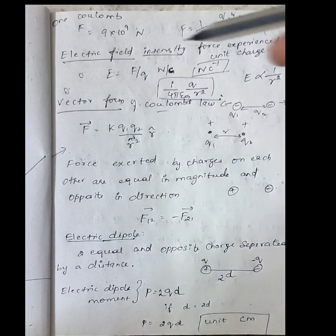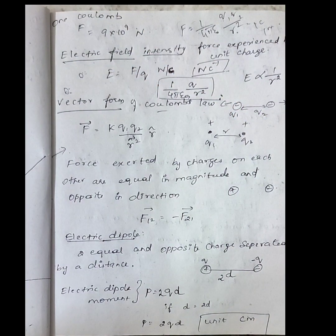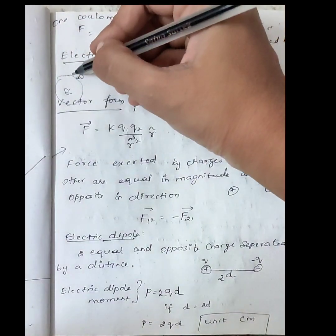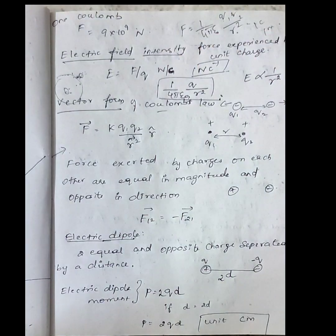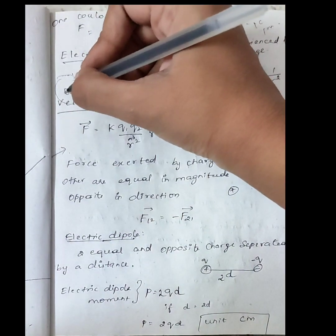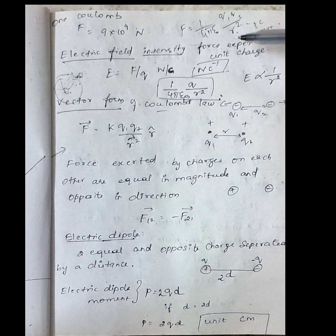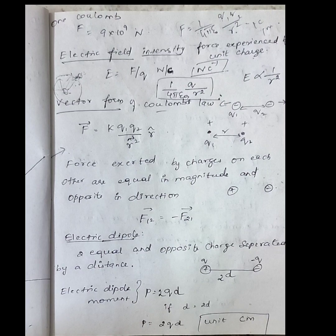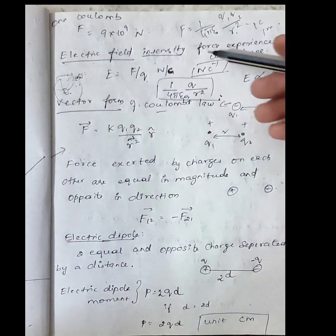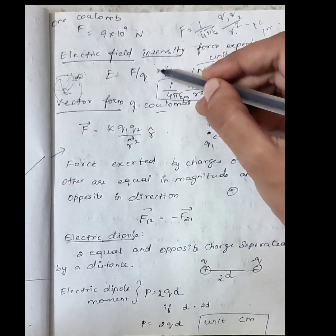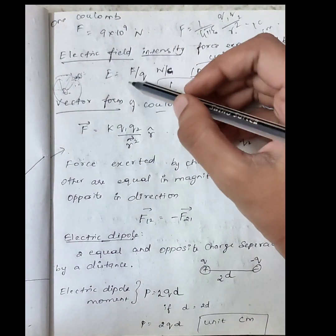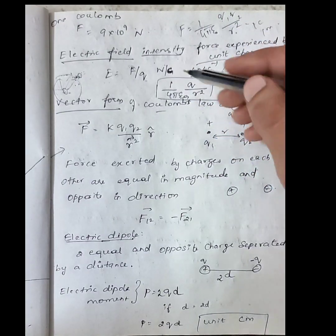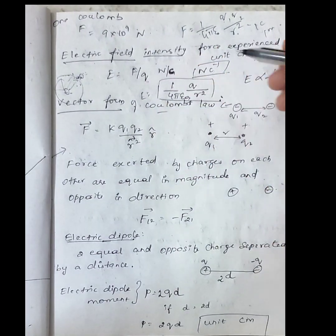The forces exerted by two charges on each other are equal in magnitude and opposite in direction — Newton's third law. F₁₂ = −F₂₁. The electric field is defined as the force experienced by a unit positive charge at a point. E = F / q, with units of newtons per coulomb. Substituting Coulomb's force, E = (1 / 4πε₀) × (q / r²).